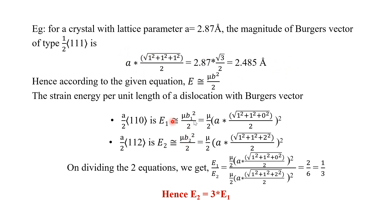To find the relationship between the strain energy per unit length of both Burgers vectors, we take E₁/E₂. When taking this ratio, μ/2 will be the same for both — it is the shear modulus of the same crystal. Since it is an FCC crystal of the same material, the lattice parameter a will also be the same. So μ/2 cancels, and a cancels as well.